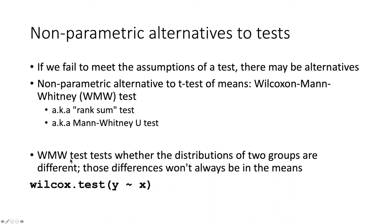The WMW test tests whether the distributions of the two groups are different. It doesn't actually test whether the means are different — it tests whether the distributions are different. So if they have different means, then they will have different distributions. However, it is also possible for them to have different distributions due to other differences besides a difference in means — for example, they could be leptokurtic or some other disruption in the shape of the curve that makes it not be normal.